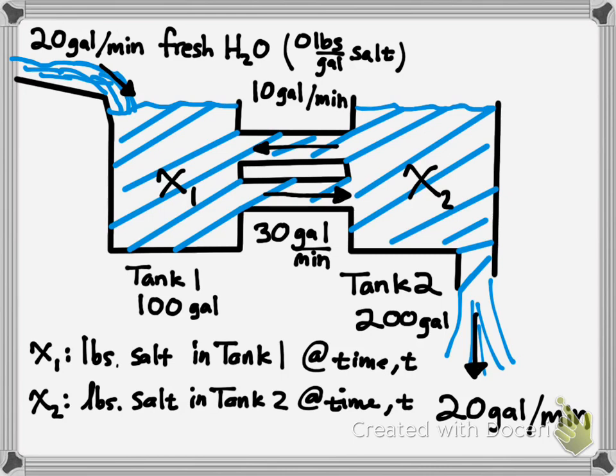If you had two tanks filled with salt water, and you were pumping in 20 gallons per minute of fresh water into this tank, which is 100 gallons, but that water was also flowing at 30 gallons per minute into tank two, which is 200 gallons, twice the volume.